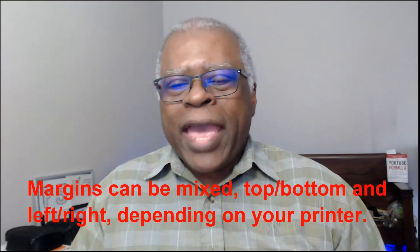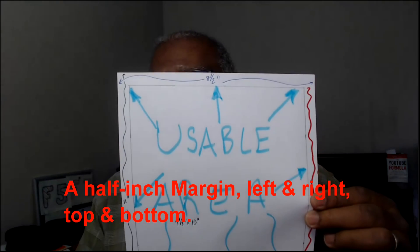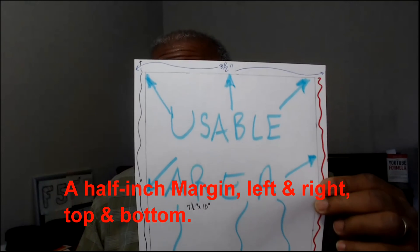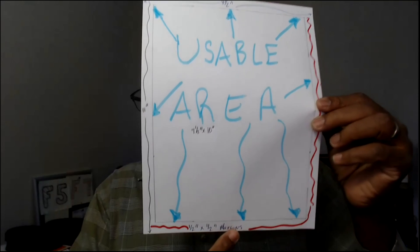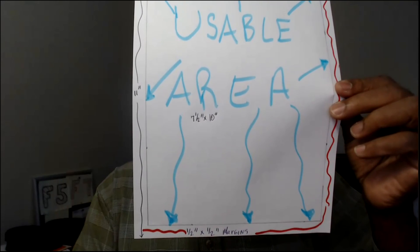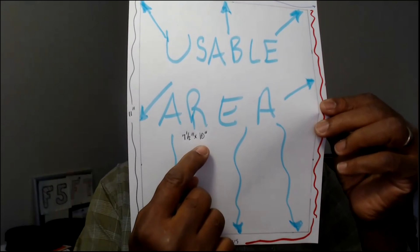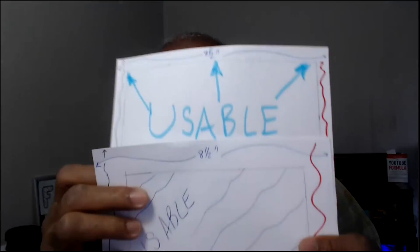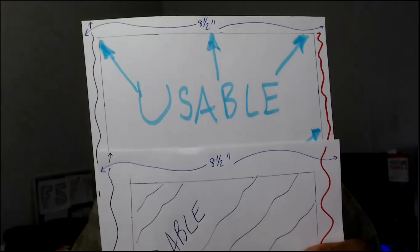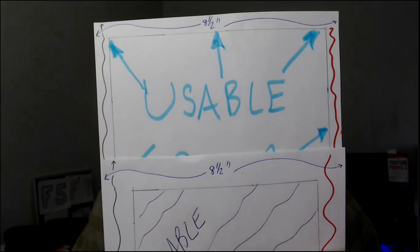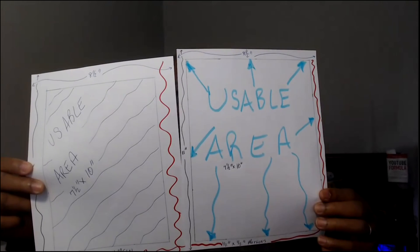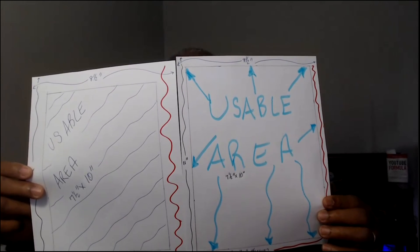If your printer allows a half-inch margin, you get much more space — half inch on each side and half inch top and bottom. That could also vary based on your printer, so you end up with a half-inch by half-inch margin and a larger usable area. It may not sound like a lot, but if you look at the two overlays, you can see how much more space you get with a half-inch margin versus a one-inch margin.